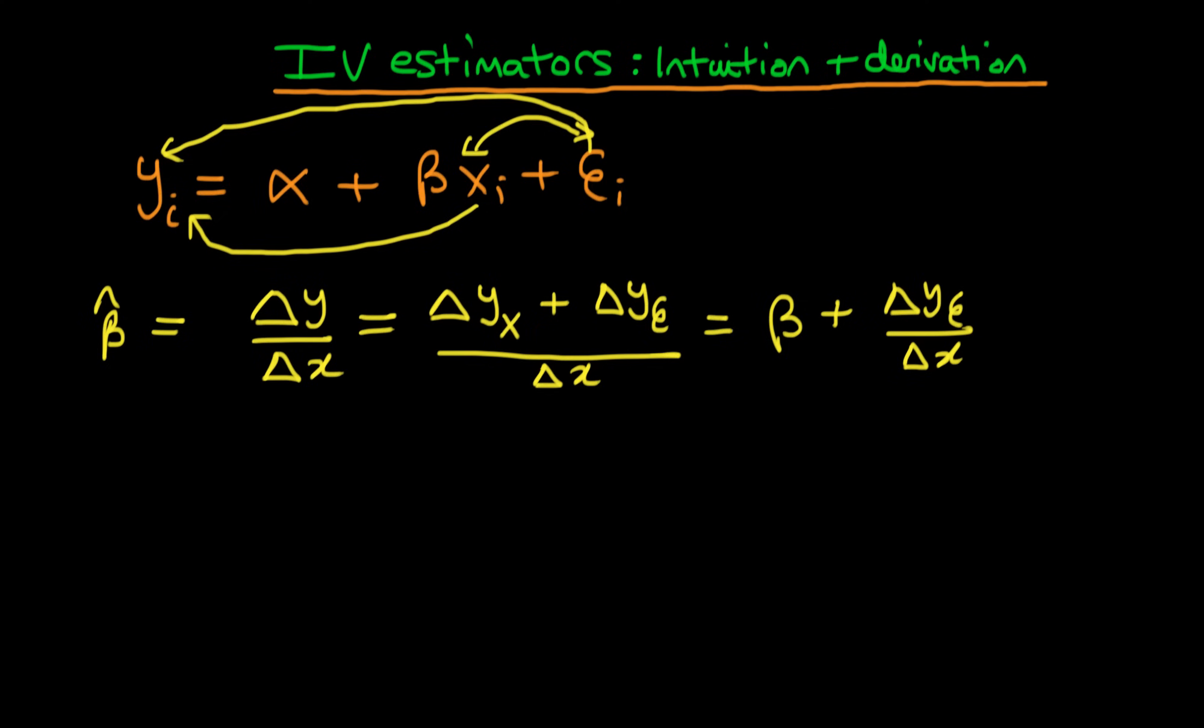So it becomes evident when we think about least squares estimators like this, that in general the least squares estimator or the expectation of the least squares estimator is not going to be the true population parameter beta. OK, so that's the problem. How do instrumental variables get around this?